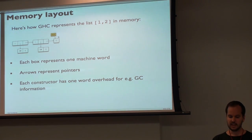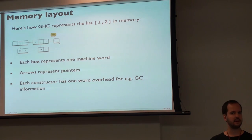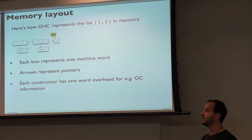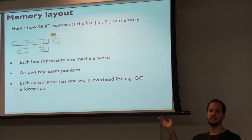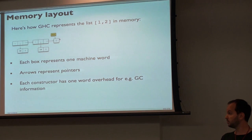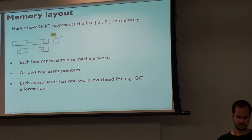One thing to note: if you have a value which is static — like the nil empty list, which is always the same — that's a nullary constructor with no payload. It can be shared across the whole program. It's statically allocated somewhere, and every list points to the same nil, because it's immutable.